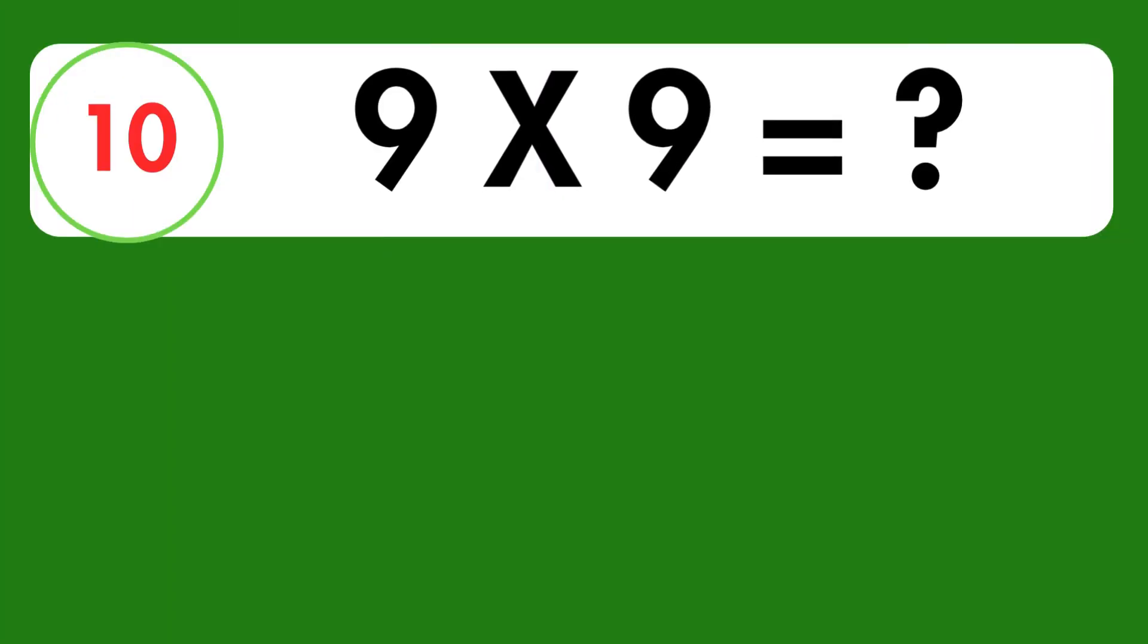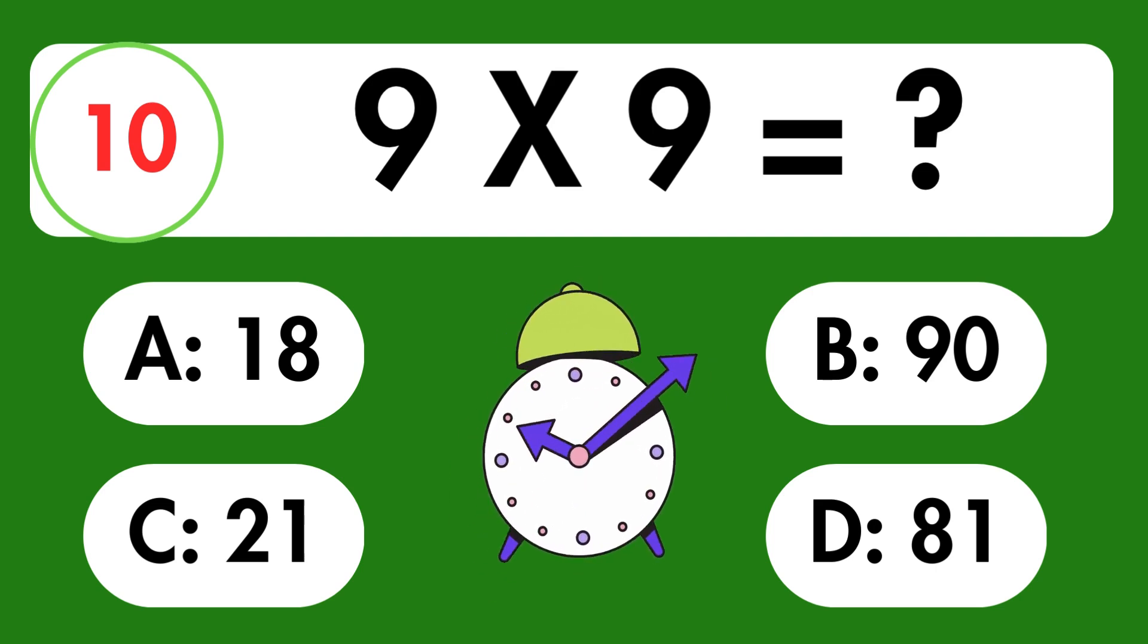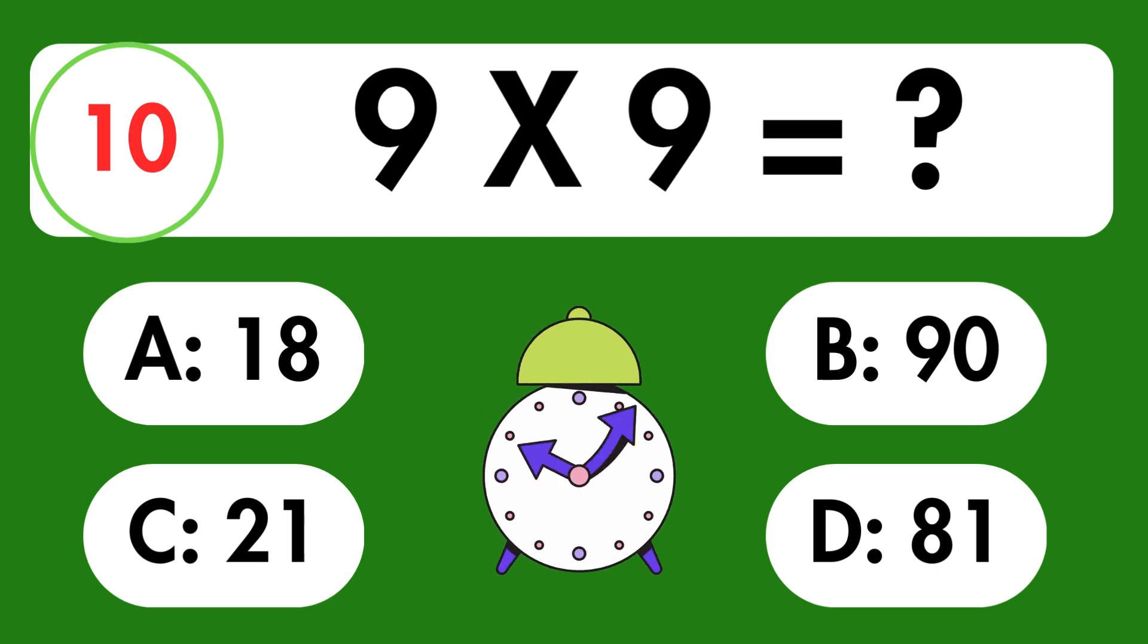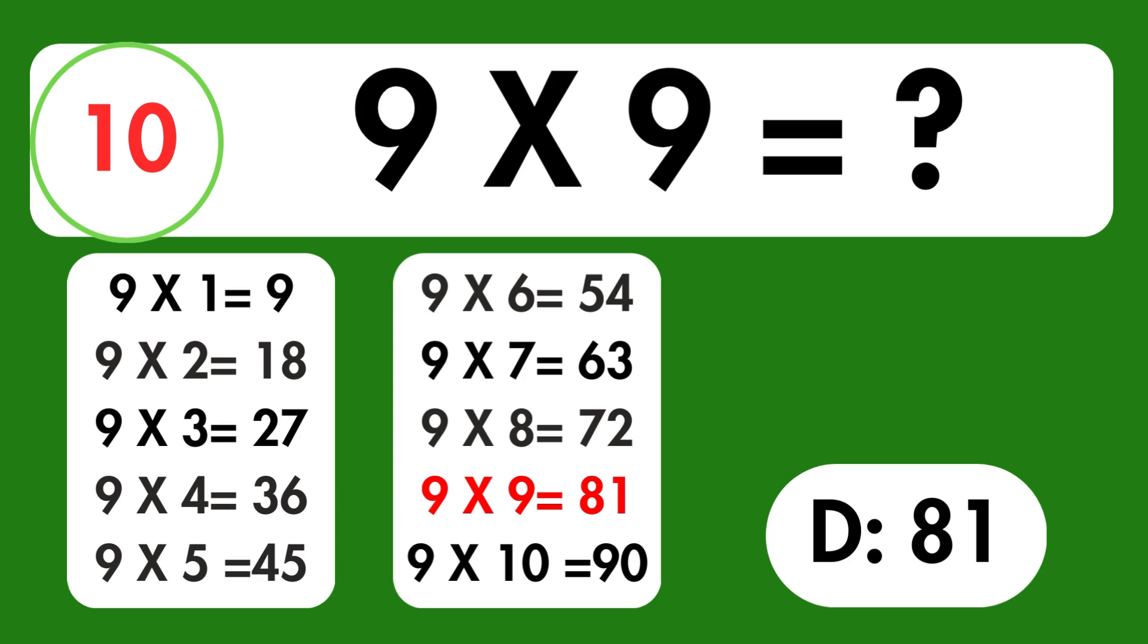7 times 6 is equals 42. Question 10. What is 9 times 9 equals? Time's up. The answer is 81.